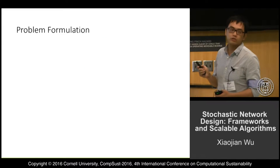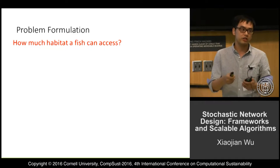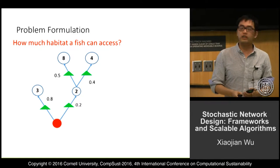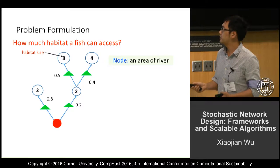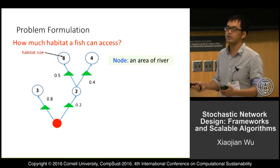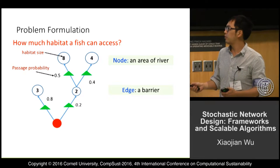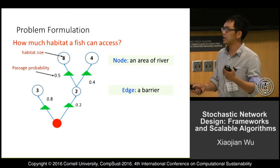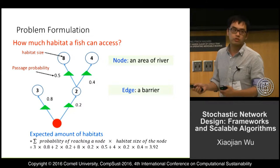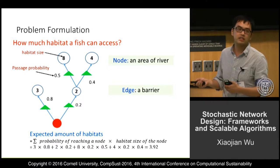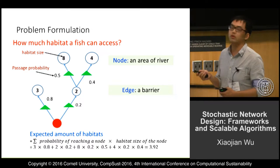Let's briefly discuss how we treat these problems. First, we want to see how much habitat a randomly selected fish can access. We use a directly rooted graph — a rooted tree. The red dots represent the entrance of the river, each node represents an area of the river, and the number on each node represents the habitat that fish can use in that area. Each edge represents a barrier, and there is a probability on each barrier — the probability that a fish can pass it, estimated by ecologists. Once we have this rooted tree, we can calculate the expected amount of habitat the fish can access, which equals the total habitat weighted by the probability that a fish can reach each location.